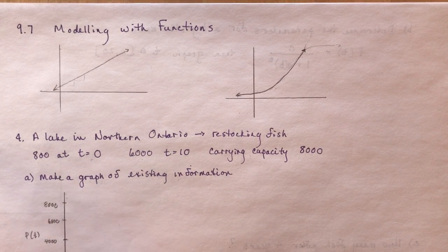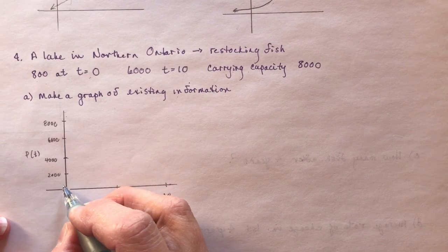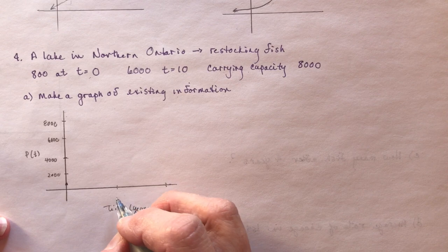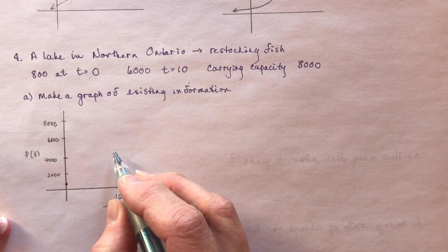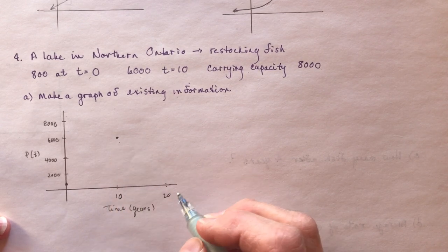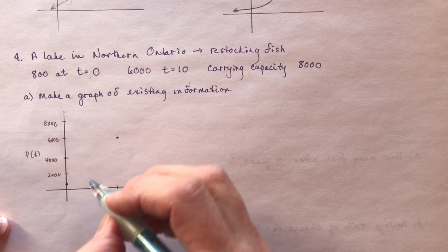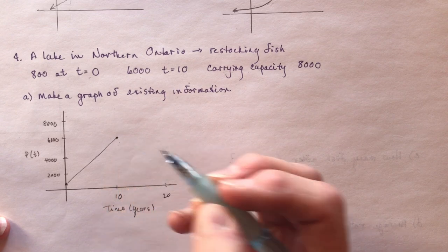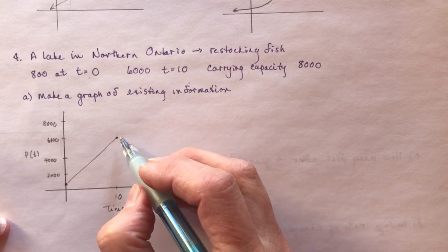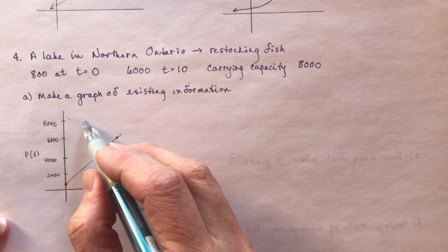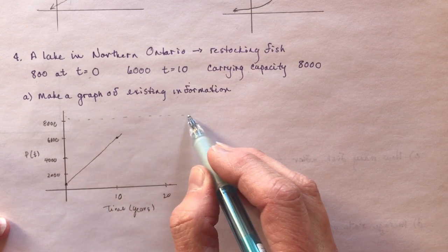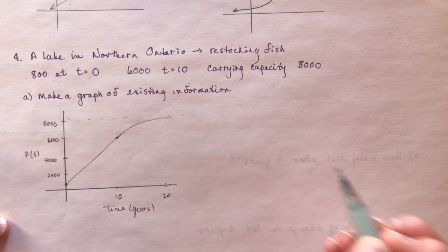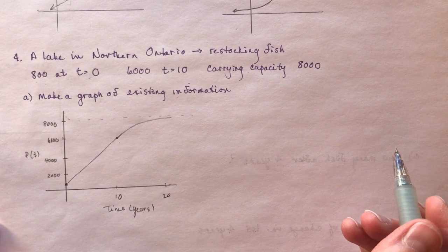So I have at time zero, I have 800 fish. So it would be somewhere around here. After 10 years, we were up to 6,000. And the carrying capacity is 8,000. So you would probably do something like you could draw a nice straight line growth like this, because you're not really sure how it's all working. And then it's going to go up to this amount here. So it should level off like this by year 20.